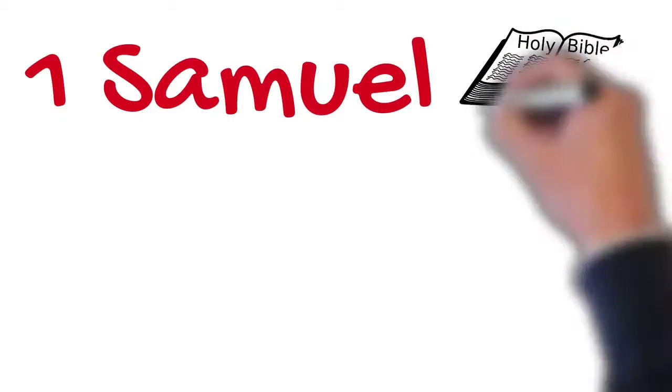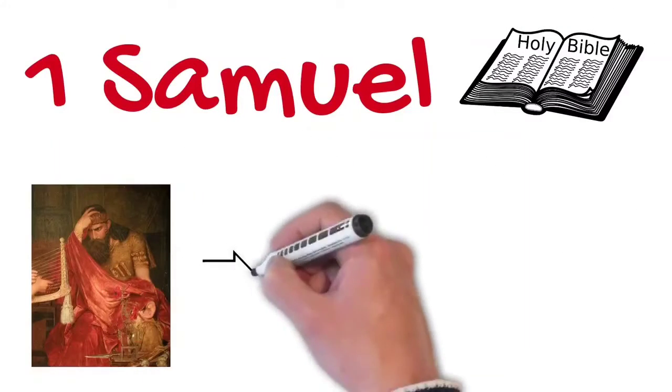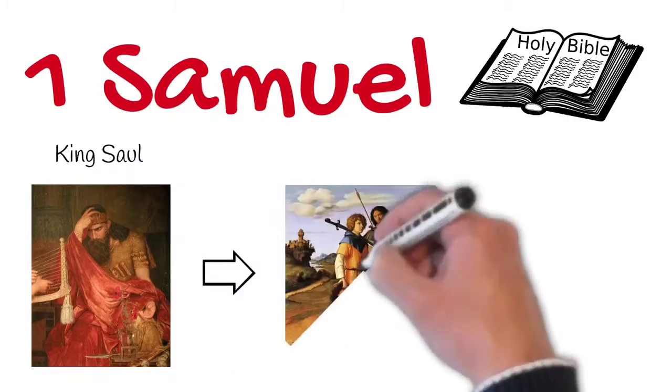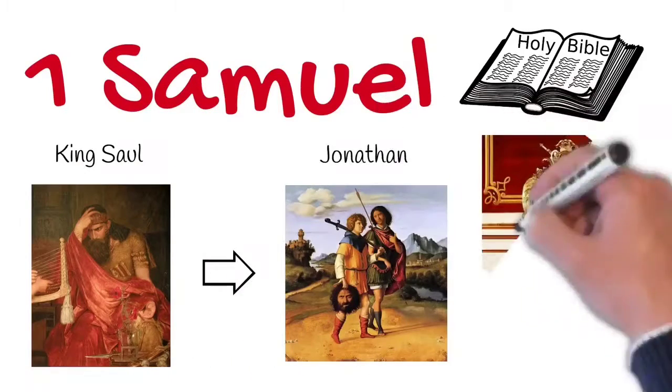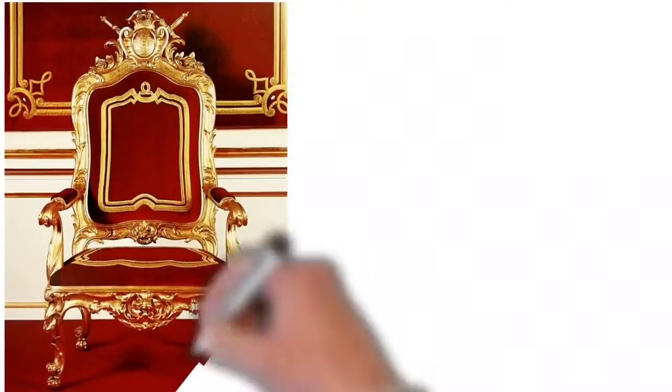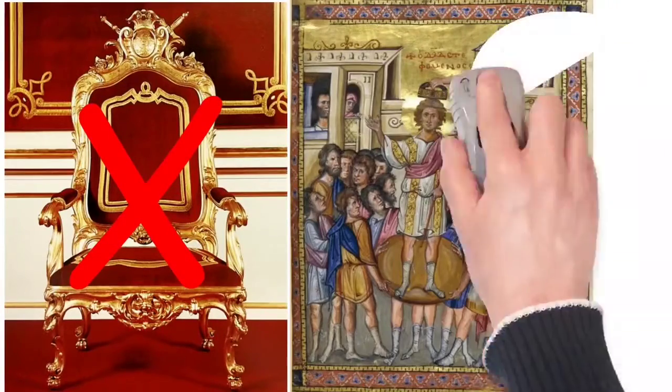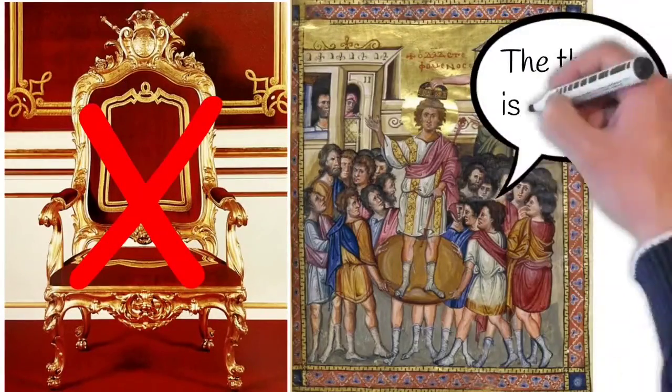A great example of a friendship like that is in the book of 1 Samuel, and it's the friendship of David and Jonathan. Jonathan was the son of King Saul, and he was actually in line for the throne. But because of his father's wickedness, God told Jonathan that he wasn't going to get to fill that role. That role was actually going to be given to his best friend, David.